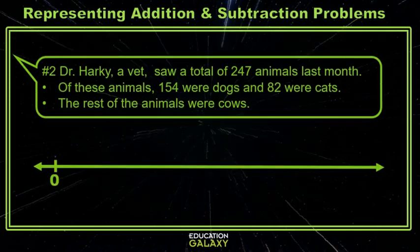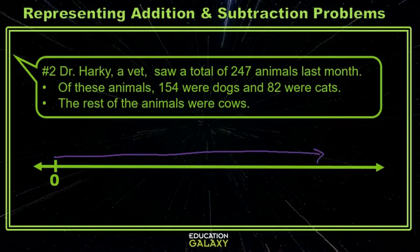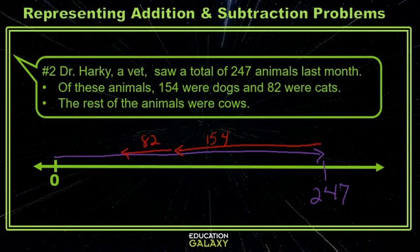We can also represent the situation with a number line. Dr. Harkey saw a total of 247 animals. Of these animals, there were 154 dogs, 82 cats, and the rest were cows. So we can represent the situation with a strip diagram, an equation, or a number line model.